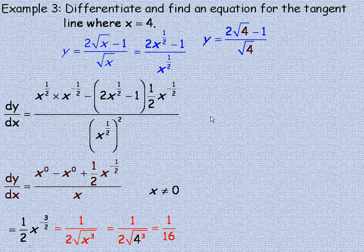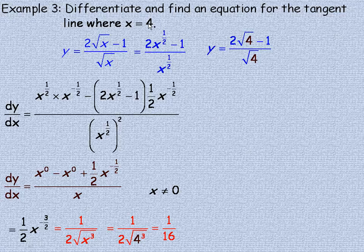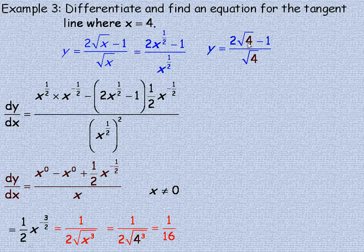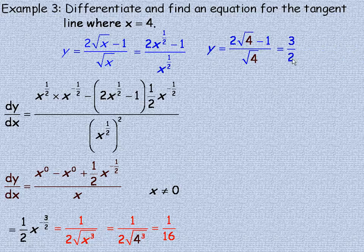Now in order to find the equation of the tangent line, I need the y value. So I'm going to substitute 4 back in the original function. 2 root 4 minus 1 over root 4. The root of 4 is 2, times 2 is 4. Minus 1 would be 3 in the numerator, and the root of 4 of course is 2 in the denominator. So the y coordinate is 3 halves.